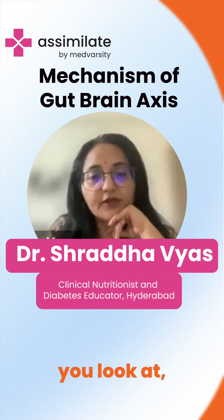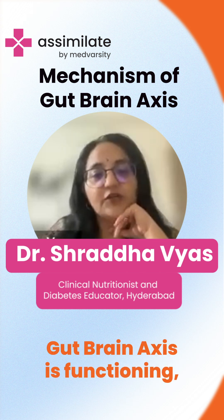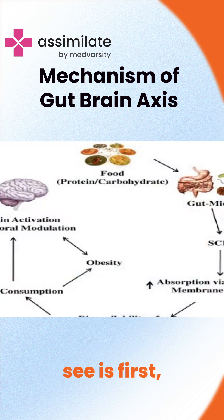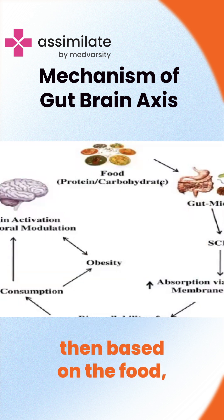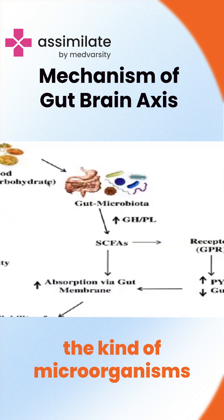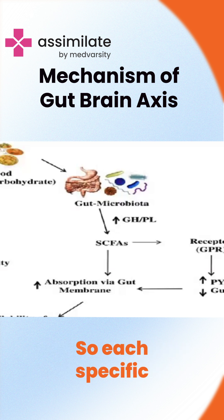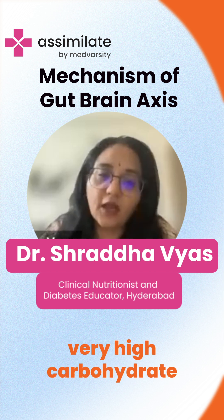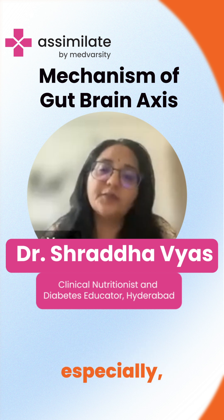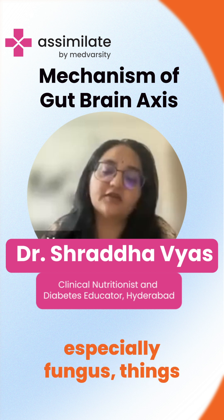Looking more closely at how the gut-brain axis functions, the first thing we analyze is the kind of food taken by the patient. Based on that food, specific microorganisms grow in the gut — each microorganism has an affinity for particular foods. For example, a very high carbohydrate or high sugar diet promotes the growth of fungus in the gut.